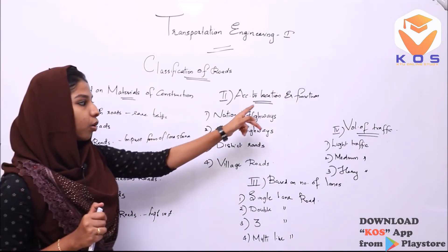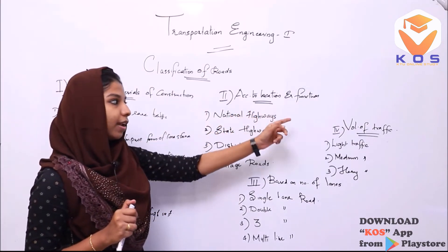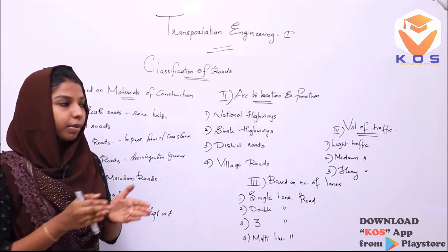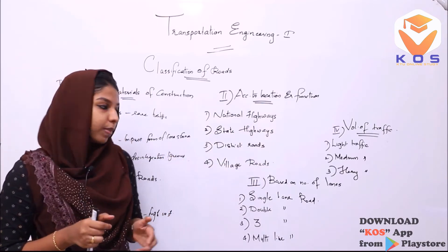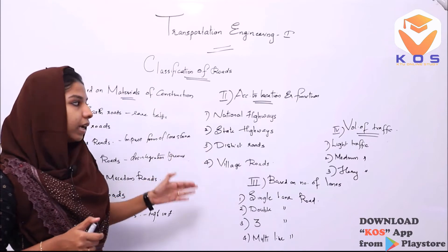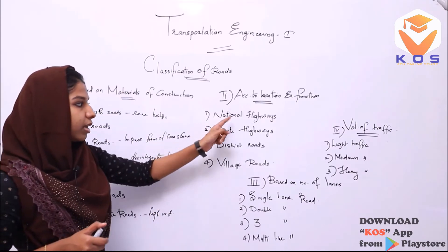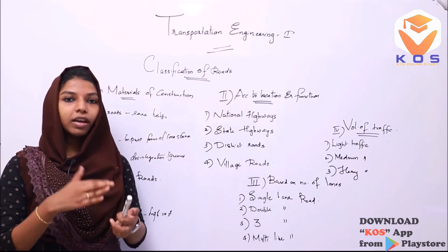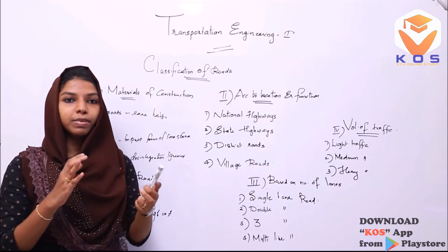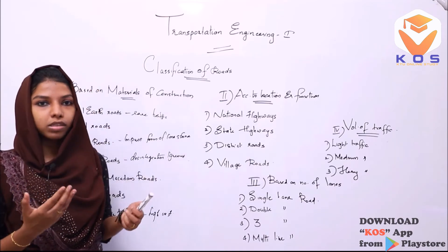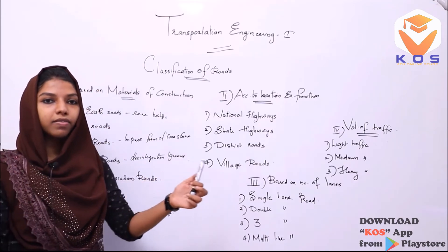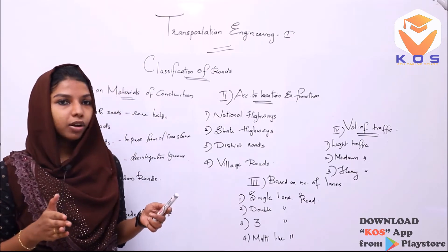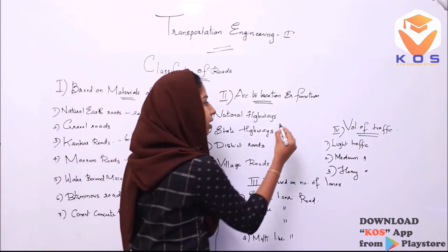The second classification is according to location and function. Based on location and function, we classify roads into main types. The first one is national highways. National highways are the main roads of the country, and we have to construct and maintain these national highways.